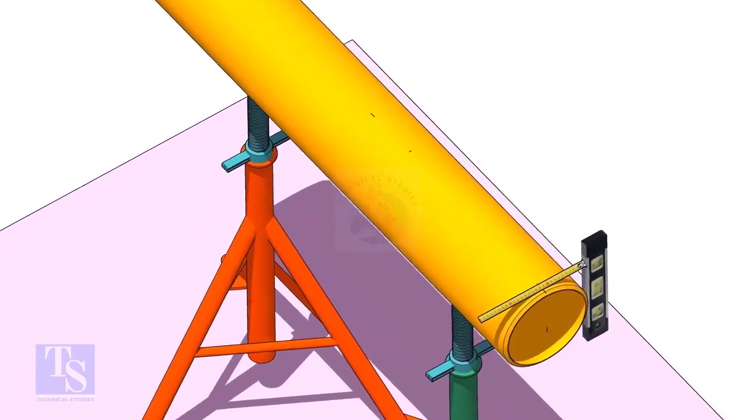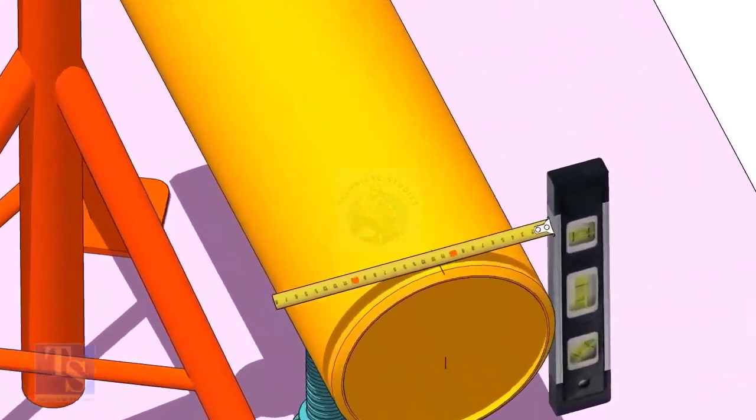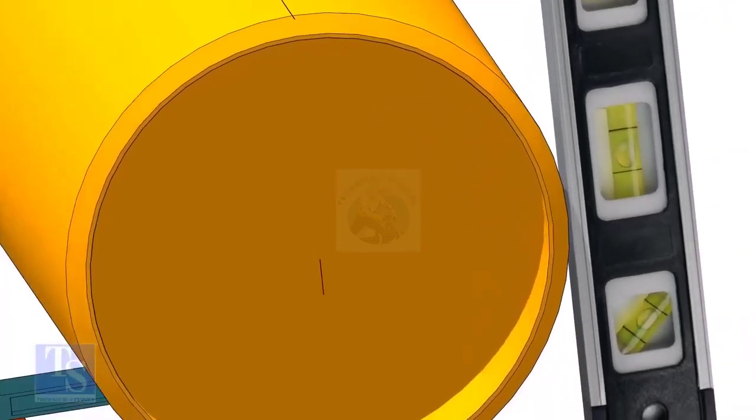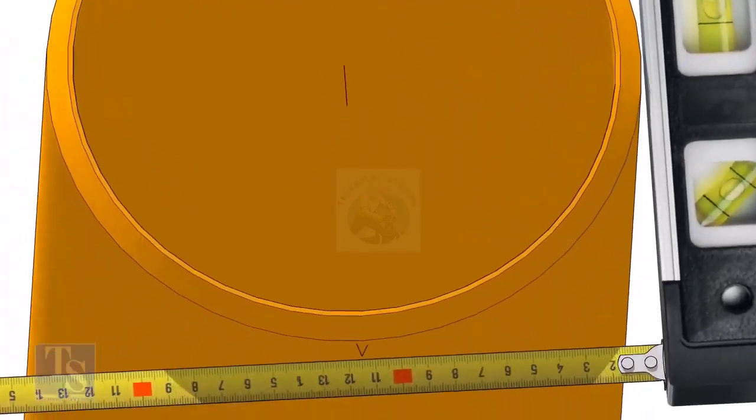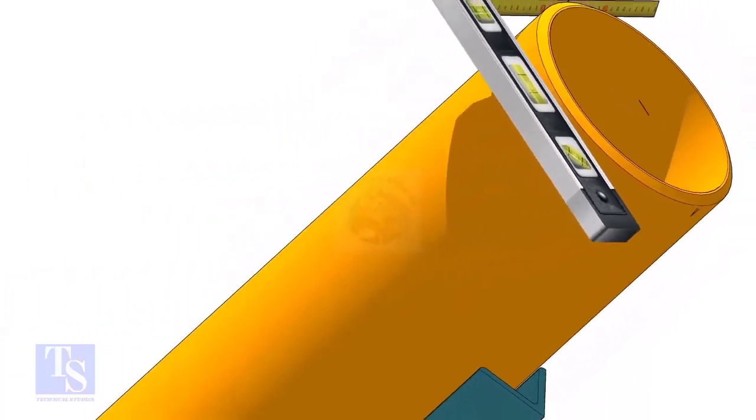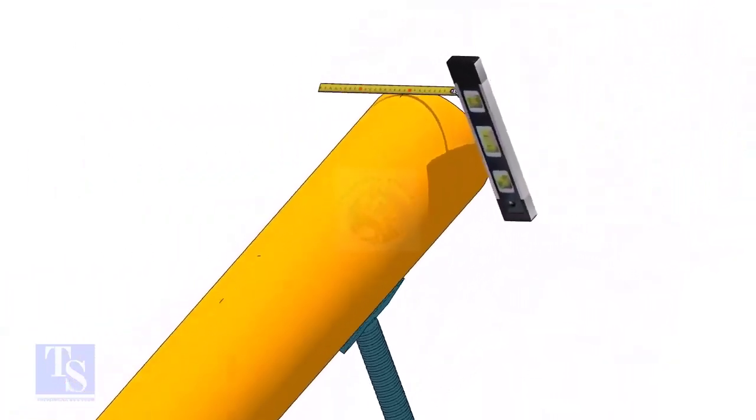Mark the center line of the header on the top and the bottom. Hold a level bottle firmly and vertical at the side of the pipe as shown. Mark half OD at the top and the bottom side of the pipe. Cross check the dimension from the opposite side to ensure the marking is correct.